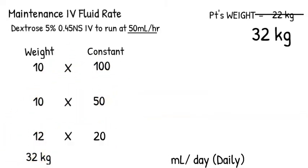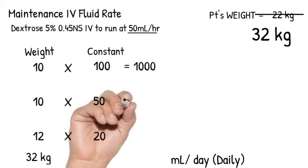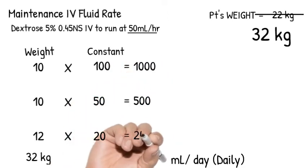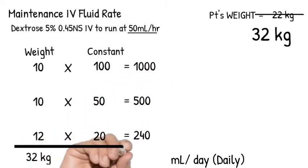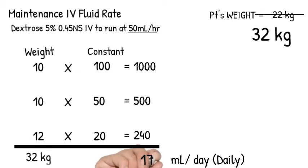When I say constant, they are the same no matter what the patient's weight is. Set it up. Do the math. So multiply 10 times 100 is 1000. 10 times 50 is 500. 12 times 20 is 240 with a total of 1740 mls per day.